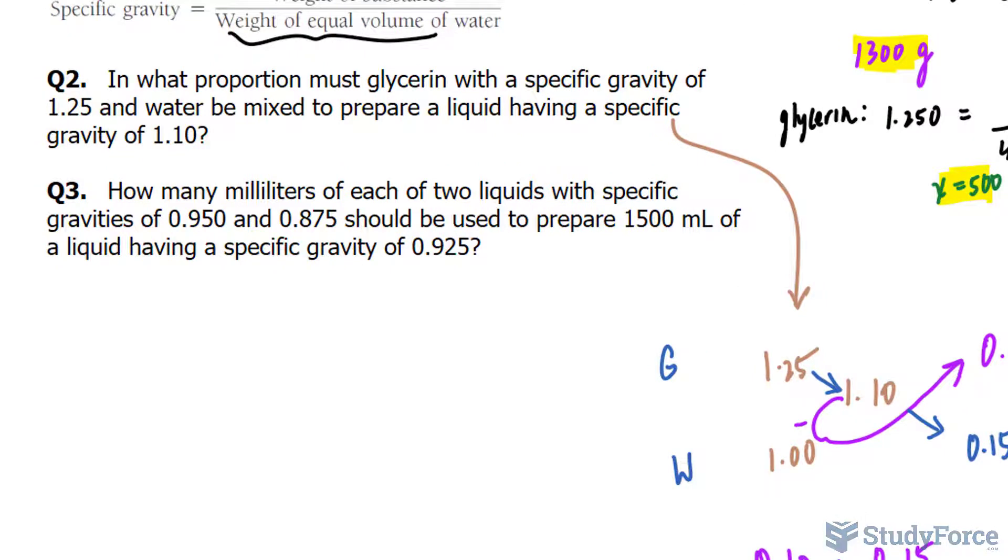In question number three, how many milliliters of each of two liquids with a specific gravity of 0.950 and 0.875 should be used to prepare 1,500 milliliters of a liquid having a specific gravity of 0.925? So that's the higher of the two, that being the lower. I'll write down 0.95 first, 0.875 underneath, and 0.925 in the middle, like this.